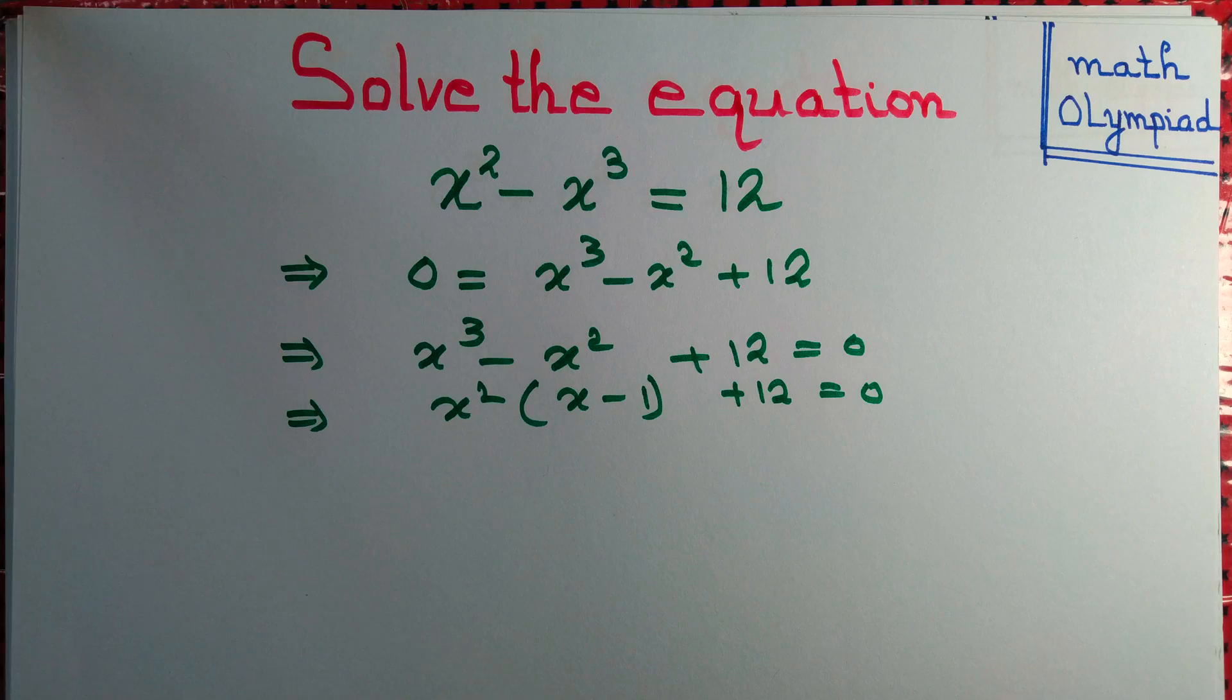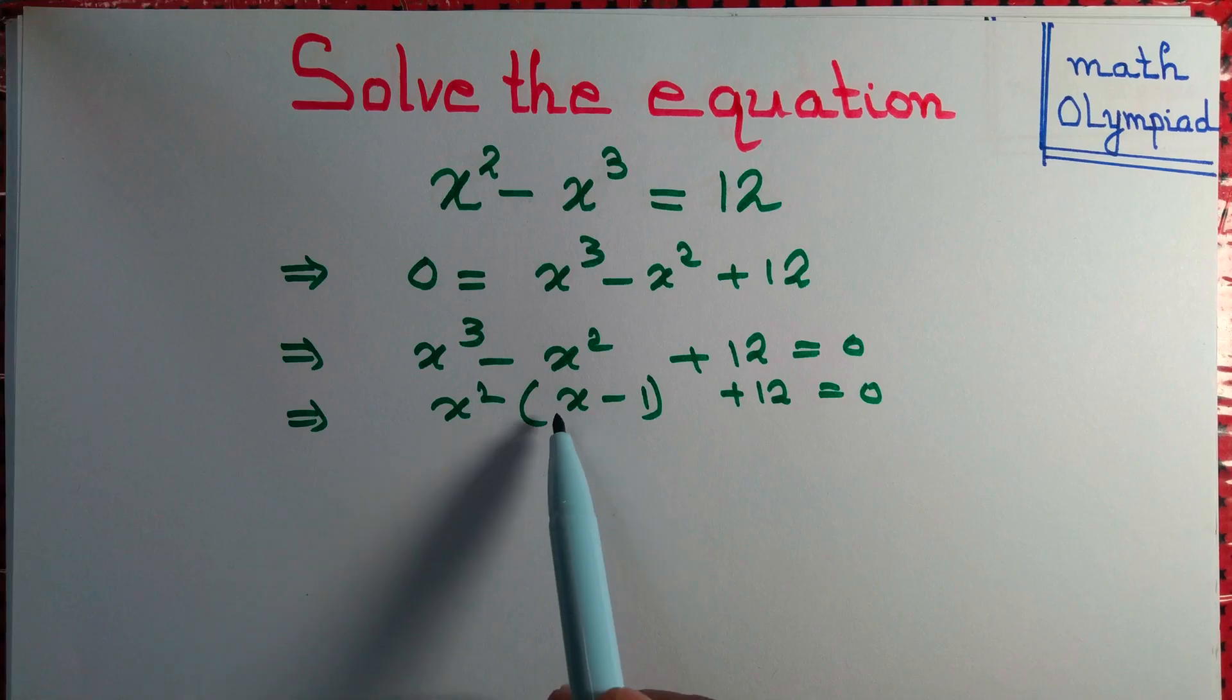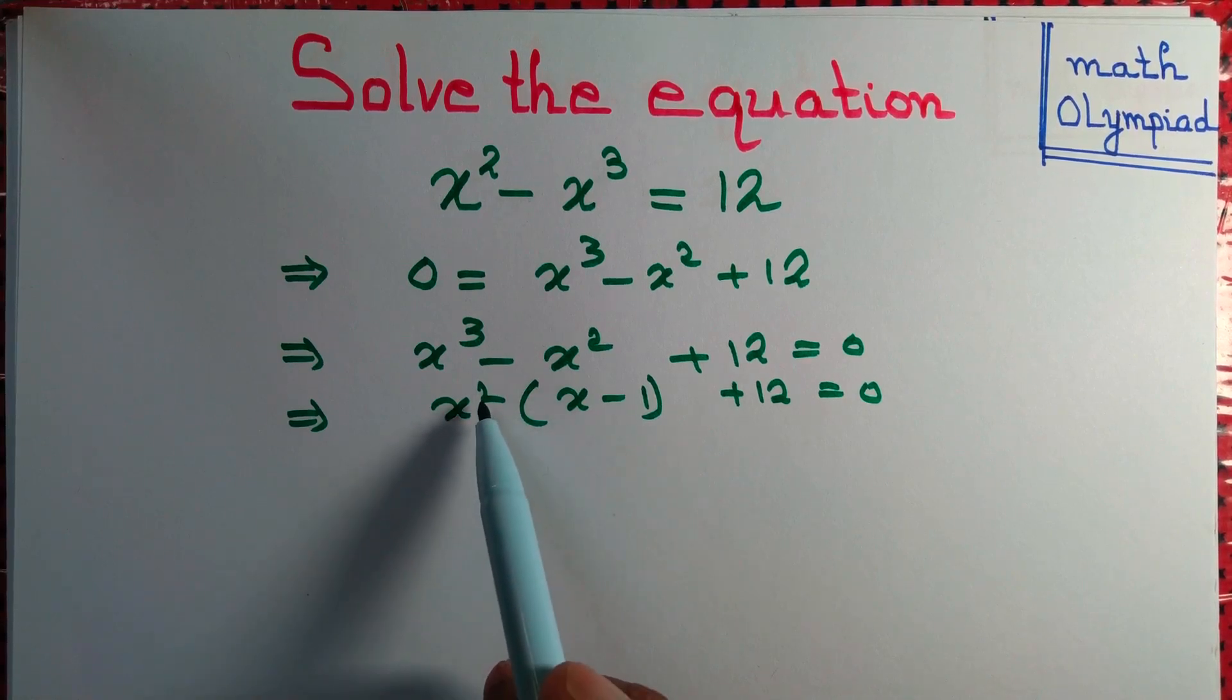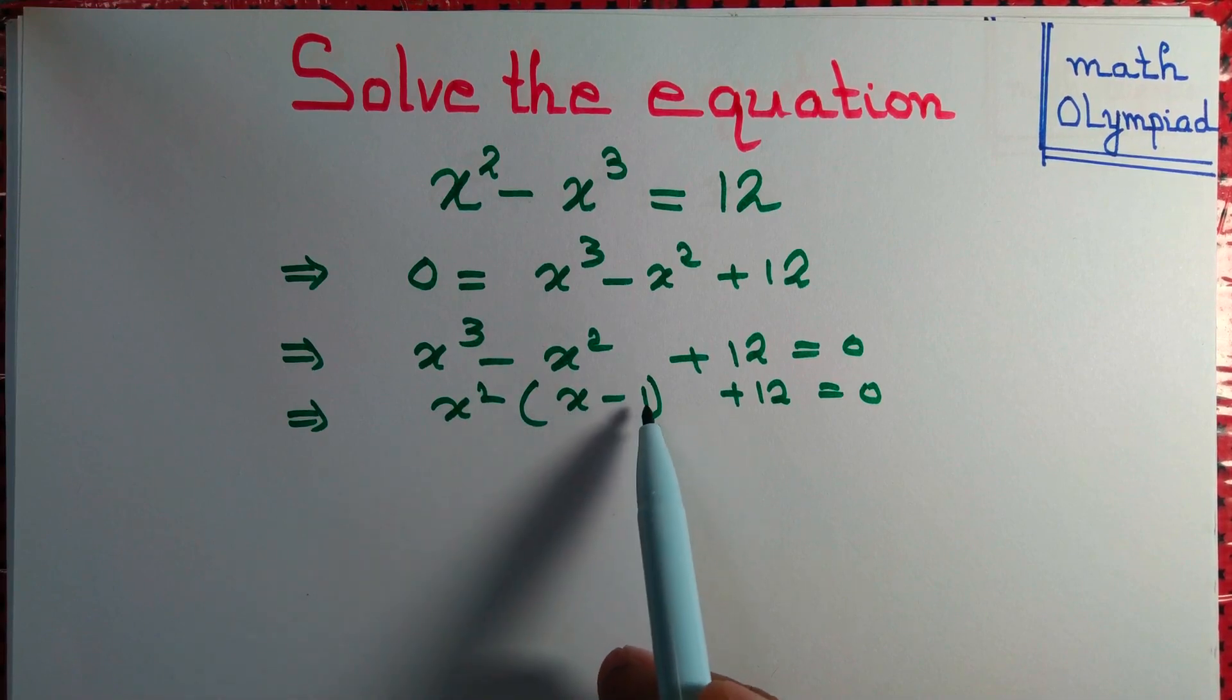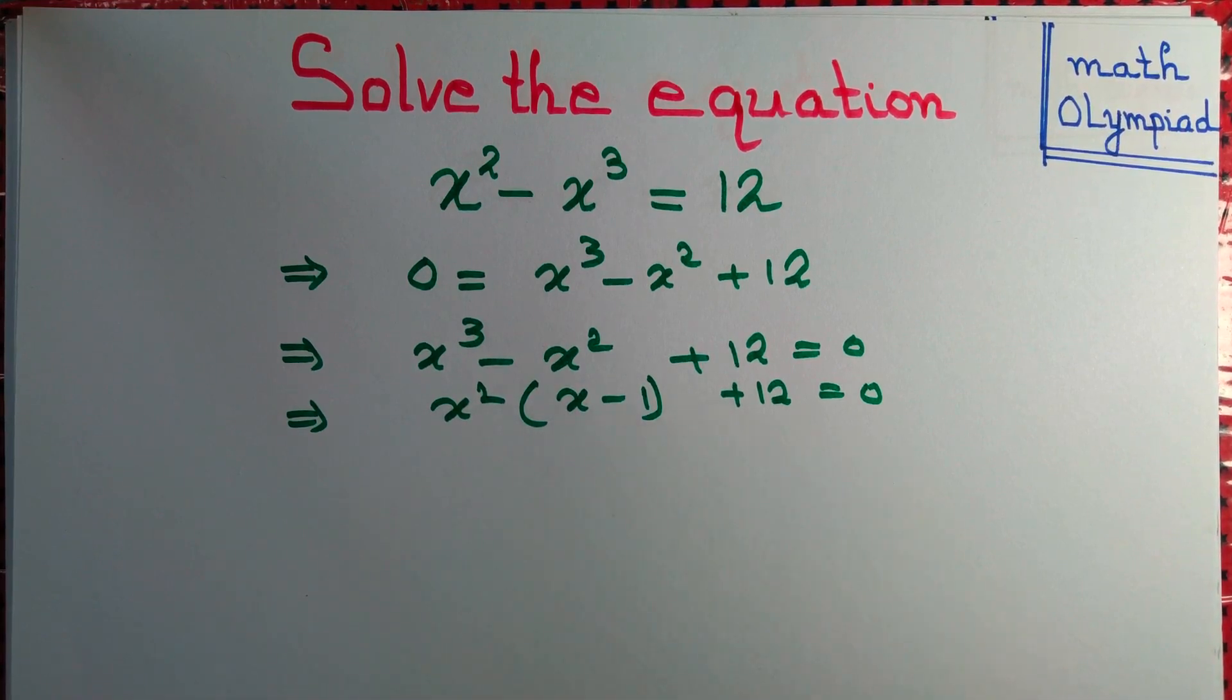x equals 3? No. What about x equals minus 1? No. Minus 2? Yes, minus 2 square is 4. 4 into minus 3 is minus 12. Minus 12 plus 12 is 0.